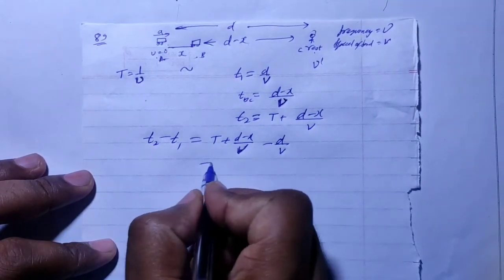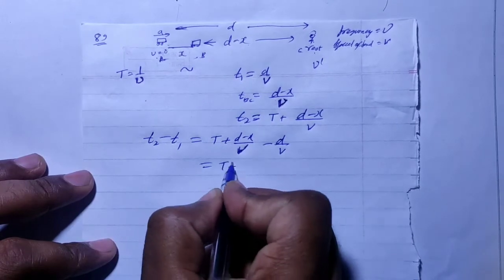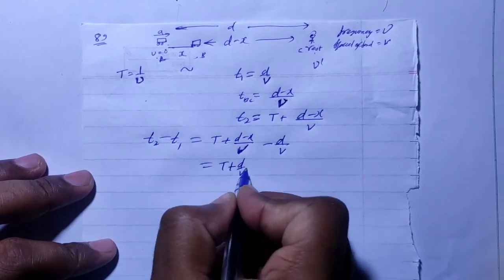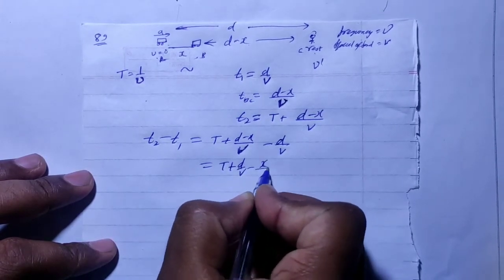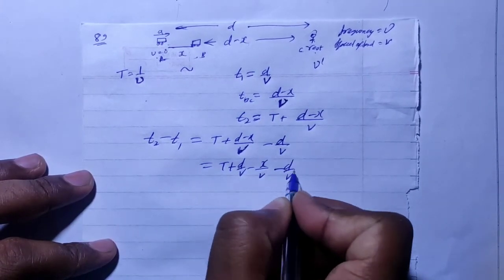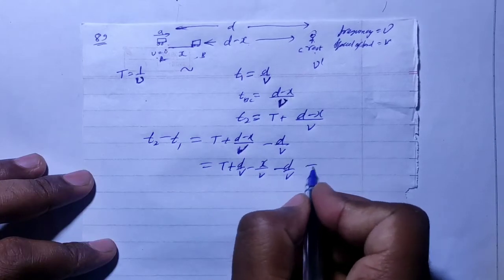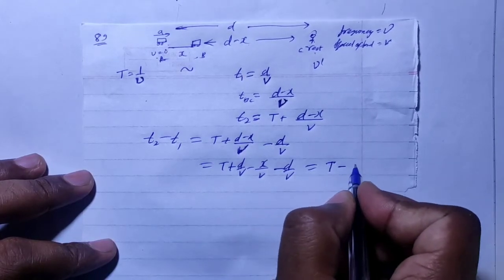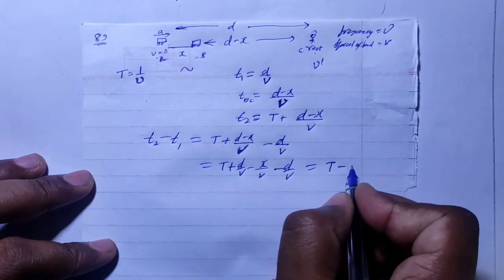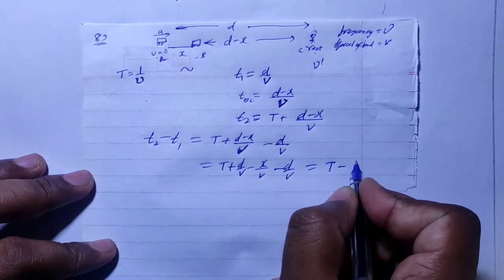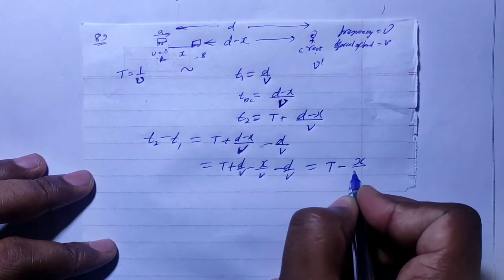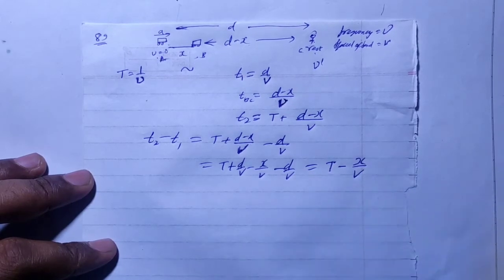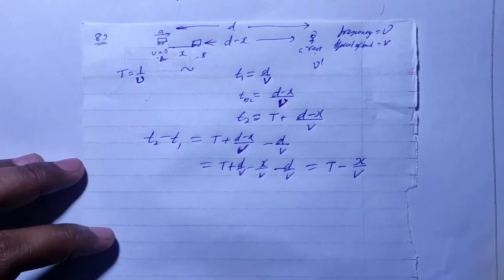So t2 minus t1 equals T plus (d minus x)/v minus d/v. This simplifies to T plus d/v minus x/v minus d/v. The d/v terms cancel, so the total observed time period equals T minus x/v.